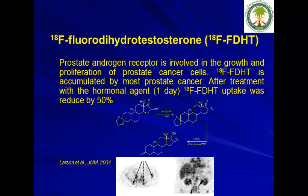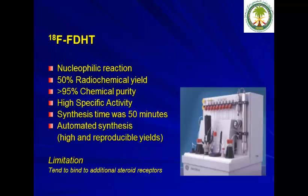Fluorodihydrotestosterone (FDHT) is used for prostate cancer detection. Production is again straightforward, producible in less than 50 minutes with high radiochemical yield and high purity. The limitation is that it tends to bind additional steroid receptors.